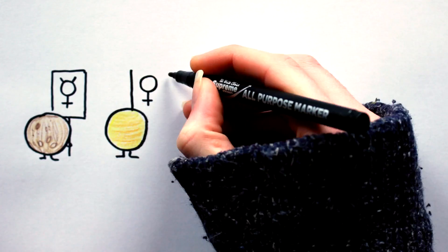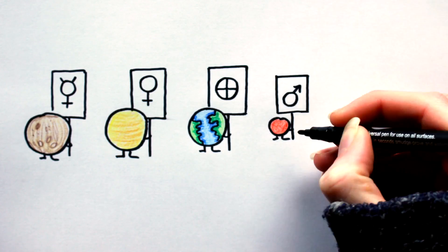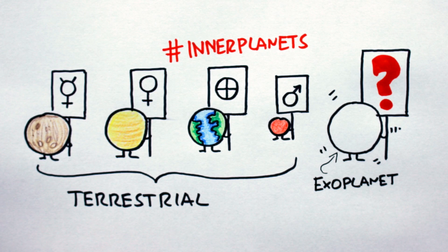This definition holds for our solar system with Mercury, Venus, Earth, and Mars, but it gets a bit shaky when we look at so-called terrestrial exoplanets. Why?